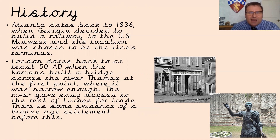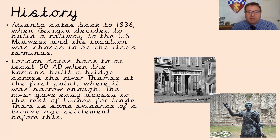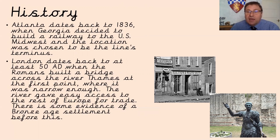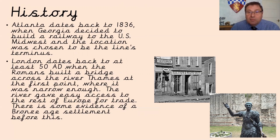London dates back to at least 50 AD when the Romans built a bridge across the River Thames at the first point where it was narrow enough. The river gave them easy access to the rest of the world for trade, and there is some evidence of a Bronze Age settlement even before that. So London is a much, much older city than Atlanta. Both cities are on really good transport links — which is why they were located where they were — but London has existed far longer than Atlanta.